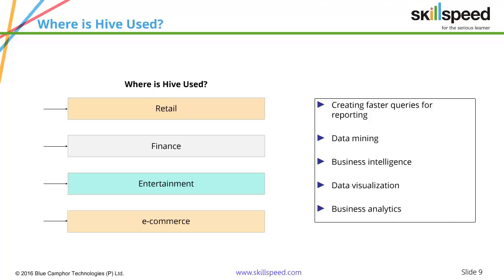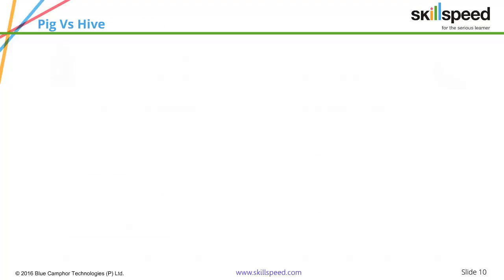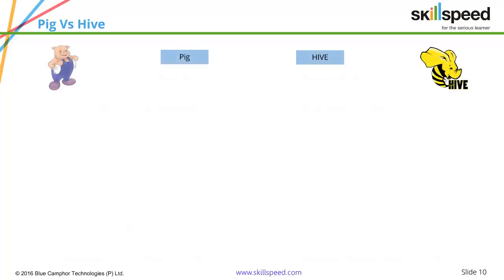Hive is used for visualization and analytics. When you have data in structured format, the first requirement is to query the data. Any structured data in a table is not useful if you lack the power to query it, and that is exactly what Hive gives you.